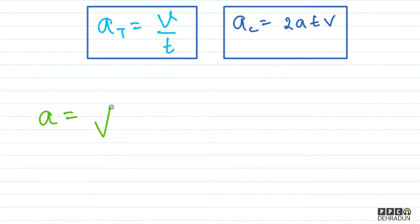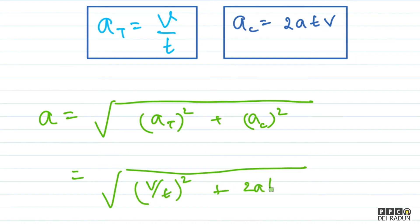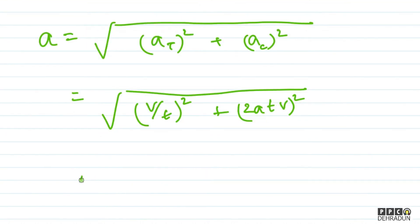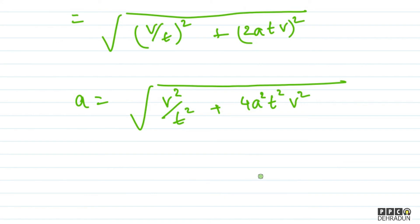Now we have both centripetal acceleration and tangential acceleration. The net acceleration will be under root of a_t squared plus a_c squared. Putting values: v upon t squared plus (2atv)² equals under root of v² upon t² plus 4a²t²v². Taking v upon t common: v upon t times under root of 1 plus 4a²t⁴. This is our final answer.